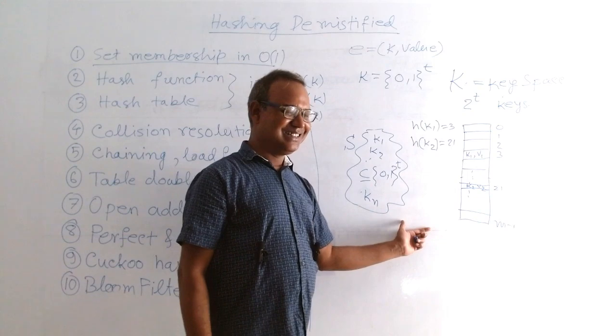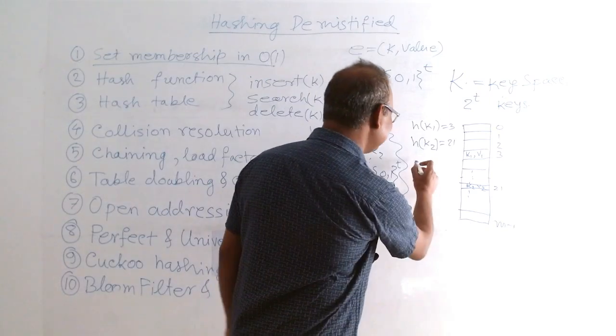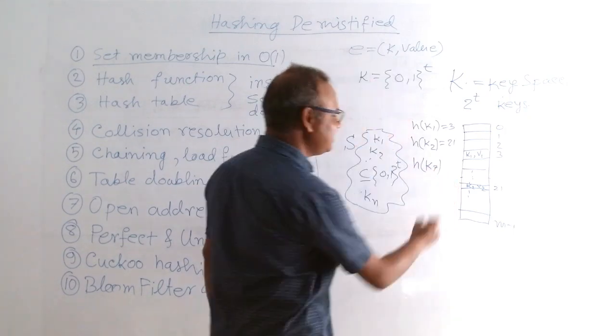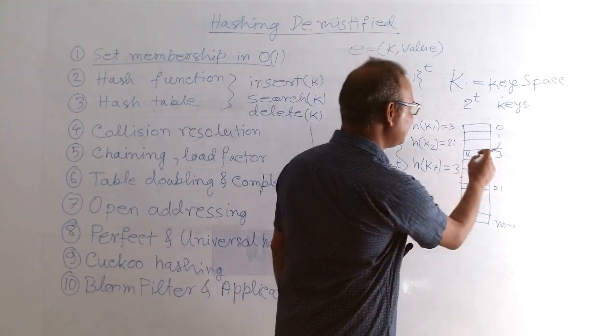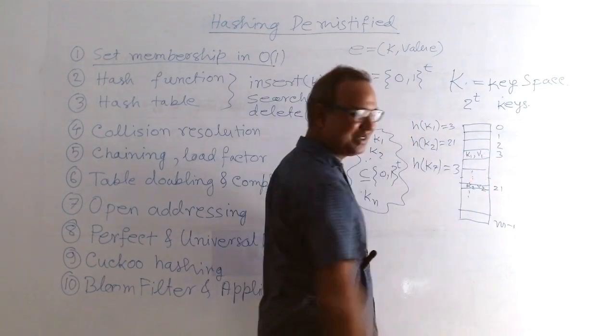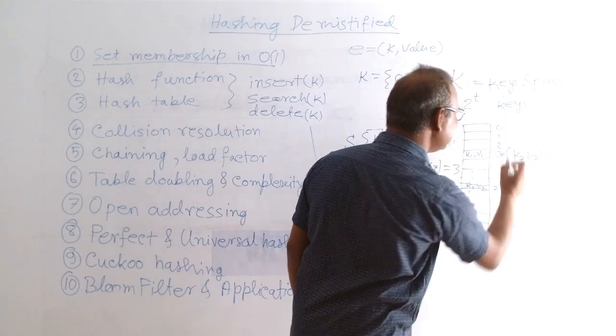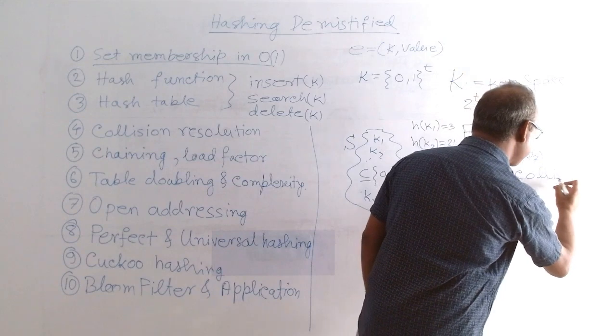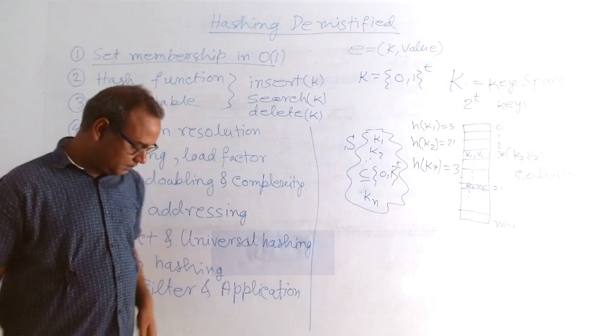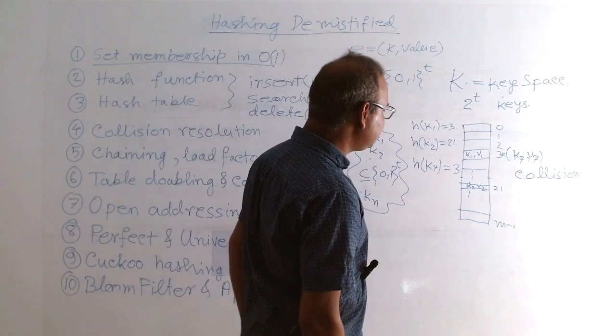Is there any problem? No. But yes, there are some problems. So suppose we are inserting h of k7 and this value is also 3. Will you keep k1, v1 here or k7, v7? So k7, v7 also qualified for this place. Which one to keep? So that situation is called collision.